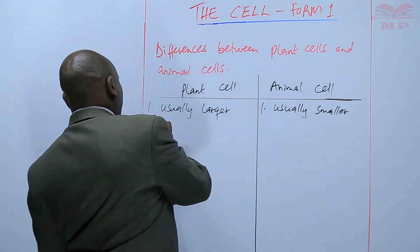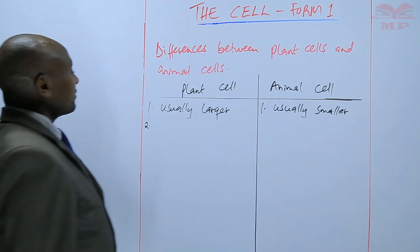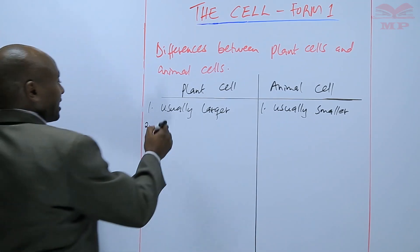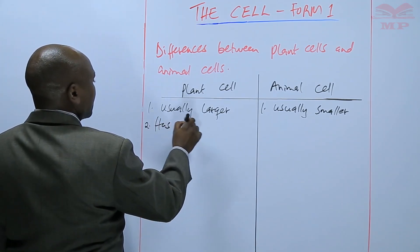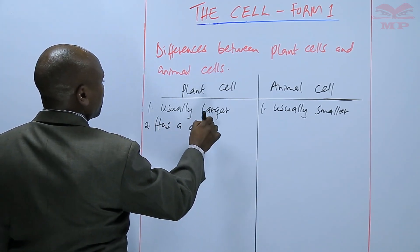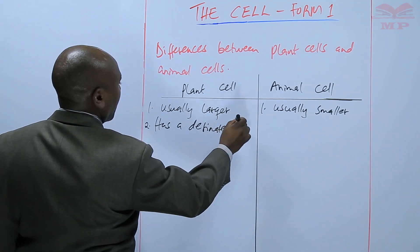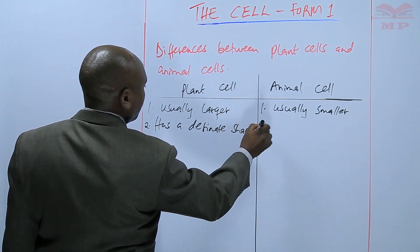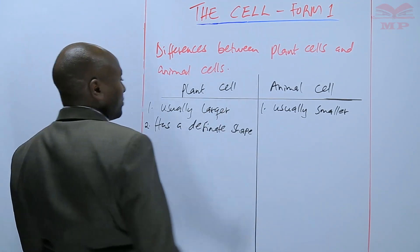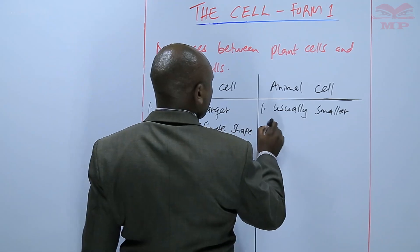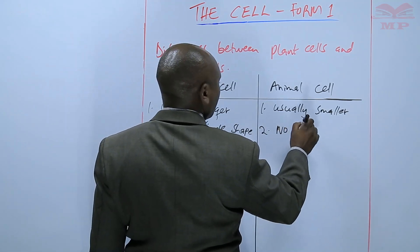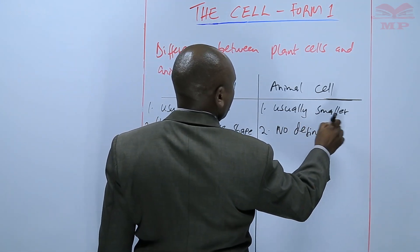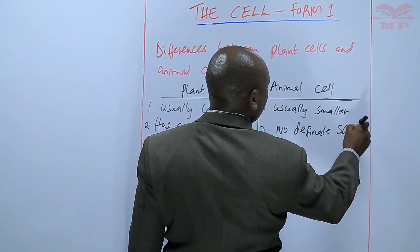Another difference: the plant cell has a definite shape, and an animal cell has no definite shape. So animal cells have very many shapes.